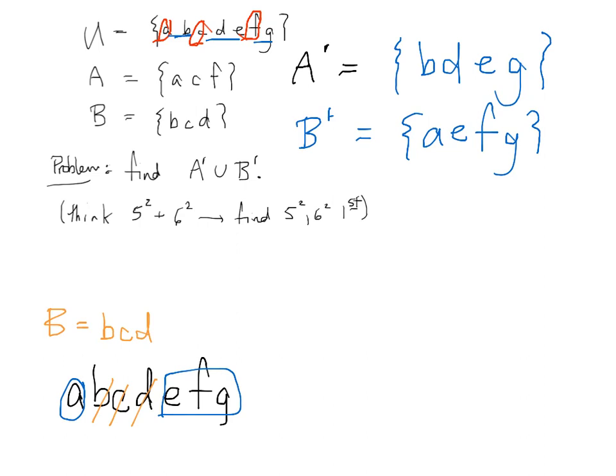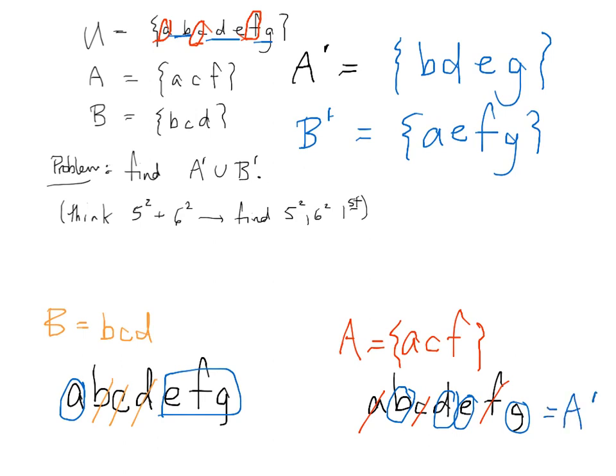So again, I'll demonstrate it for A prime again. So what I do is I list U, A, B, C, D, E, F, and G, right? I list A, which is A, C, and F. The way that I compute A prime, I cross out A, C, and F because that's what's in A. And what's left gets promoted to A prime, and it's B, D, E, and G. Again, all this is is a systematic way to make sure you don't screw up. Okay?